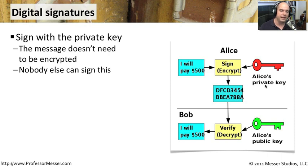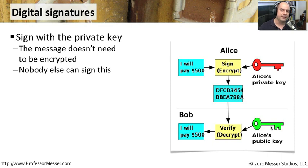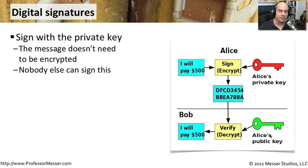Nobody has access to that private key except Alice, so we can be assured that her signature is something very unique to her. Alice sends the message to Bob, which says 'I will pay $500.' Bob looks at the signature at the bottom and grabs Alice's public key to verify that it really came from Alice. Bob doesn't have access to Alice's private key, but that's okay — everybody has access to Alice's public key. It's on public key servers and may be on Alice's website. Bob grabs Alice's public key and verifies that the digital signature of this message matches perfectly.